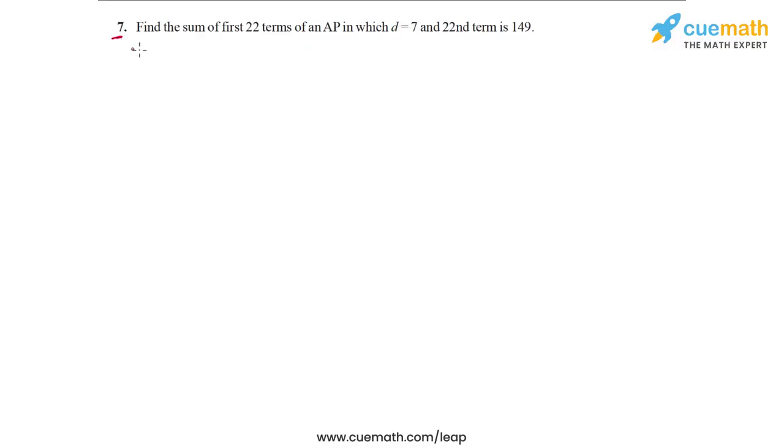Okay, the problem statement in question 7 says, find the sum of the first 22 terms of an AP in which D is equal to 7.